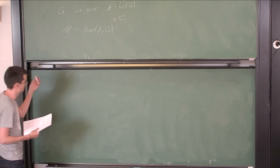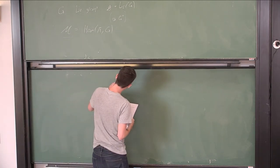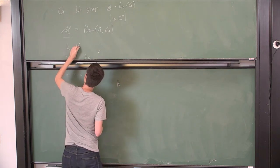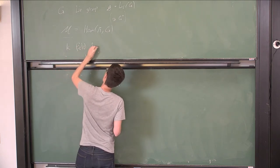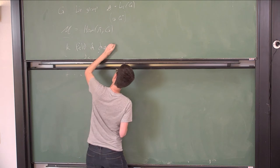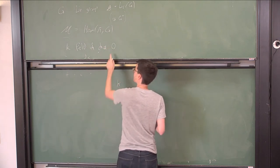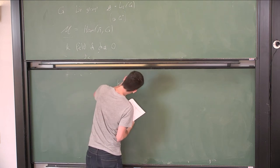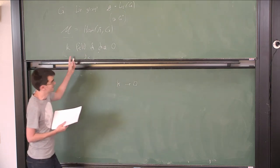The first thing that we'll do, I will take some field of characteristic zero. Although characteristic zero is not so important for most of the things that I will be thinking of the reals anyway.